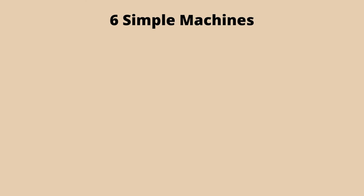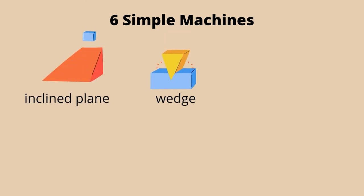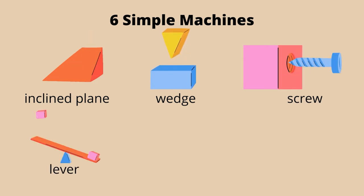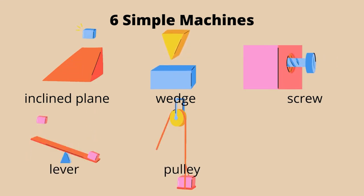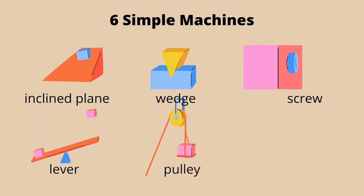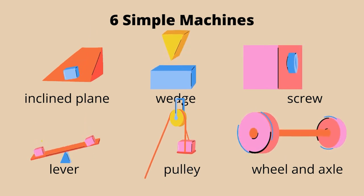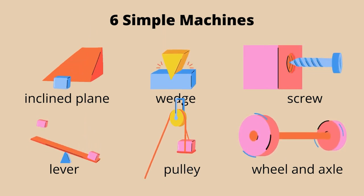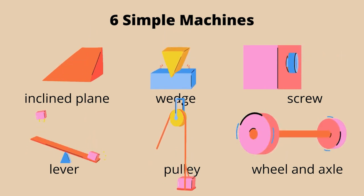There are six simple machines, namely: inclined plane, wedge, screw, lever, pulley, and wheel and axle. Let us first describe each and every one.